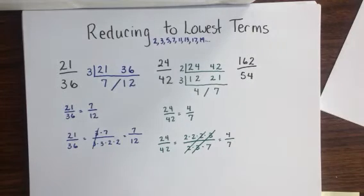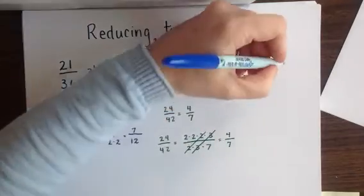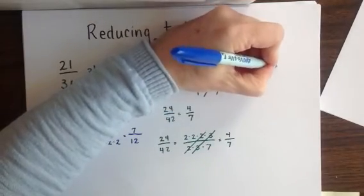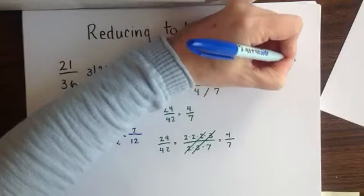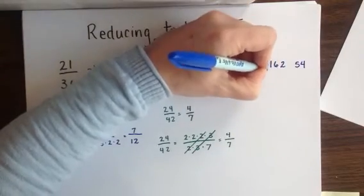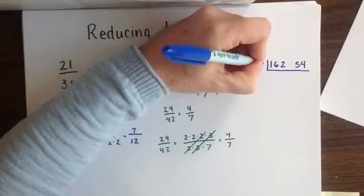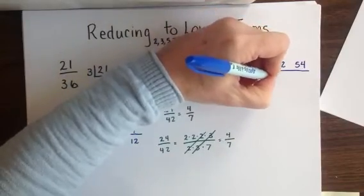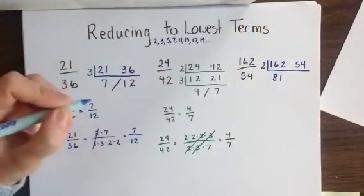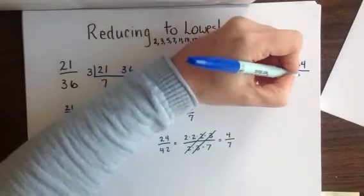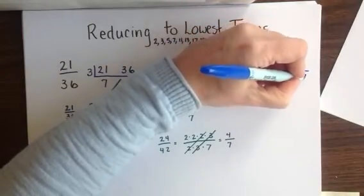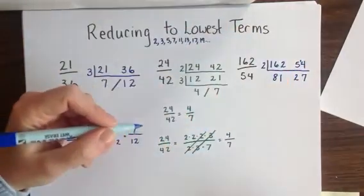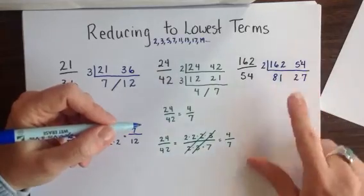Our last example has us reducing the fraction 162 fifty-fourths. Placing both of these side by side in the division machine has me dividing by 2 first, since both numbers are even. 162 becomes 81, and 54 becomes 27, since 2 fits into 5 once with a remainder of 1.